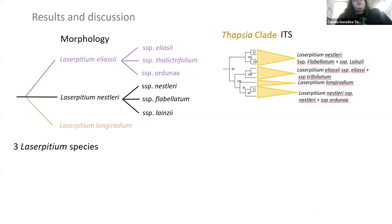If we take the morphological hypothesis regarding these three species, we would say that there exists Laserpitium elaeosalinum, which is an endemic of the Iberian Peninsula, Laserpitium eliasii, an endemic of Southwest Europe, and Laserpitium longiradium, an endemic of the Iberian Peninsula.